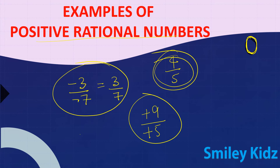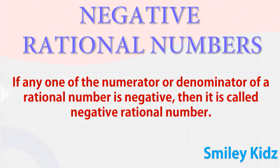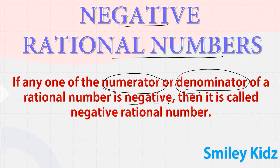Let me give you a few more examples of positive rational numbers. Now let's see negative rational numbers. If any one of the numerator or denominator of a rational number is negative, then it is called a negative rational number.